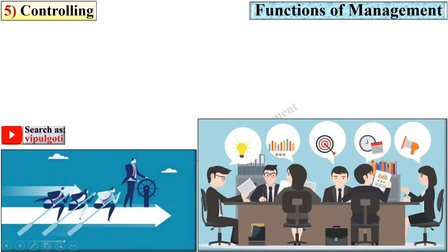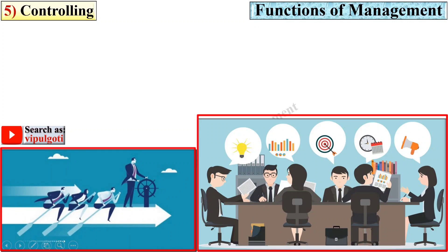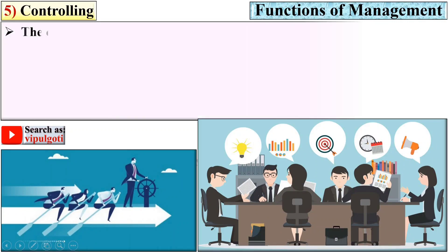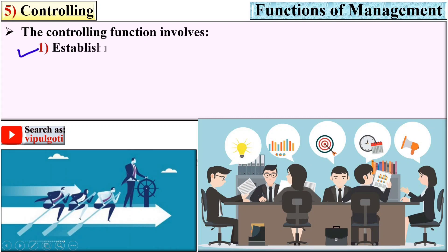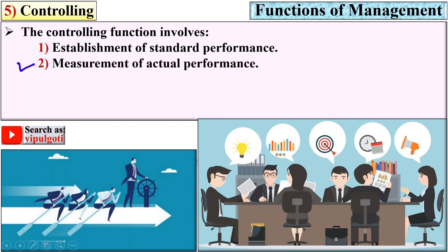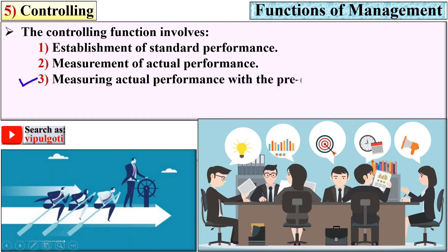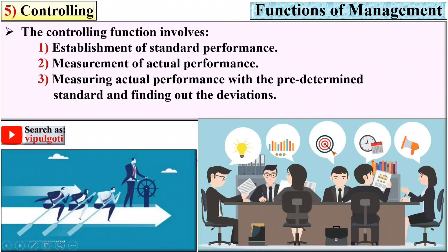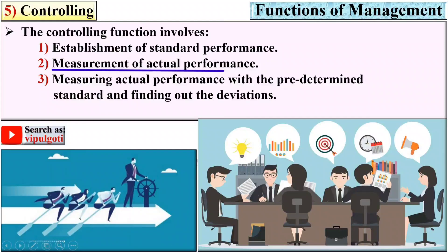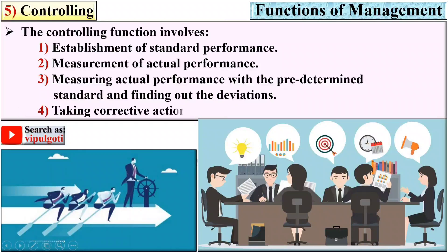Now the last function: controlling. From the figure you can understand controlling as a function of management. The controlling function involves establishment of standard performance, measurement of actual performance, comparing actual performance with predetermined standards, and finding out the deviations. Finally, taking corrective actions according to those deviations.